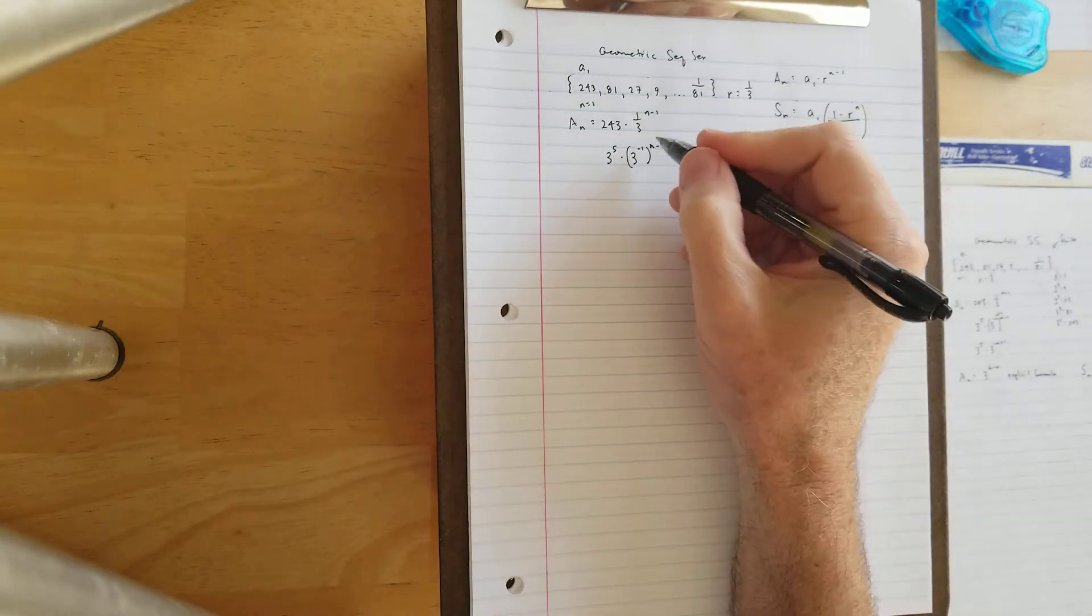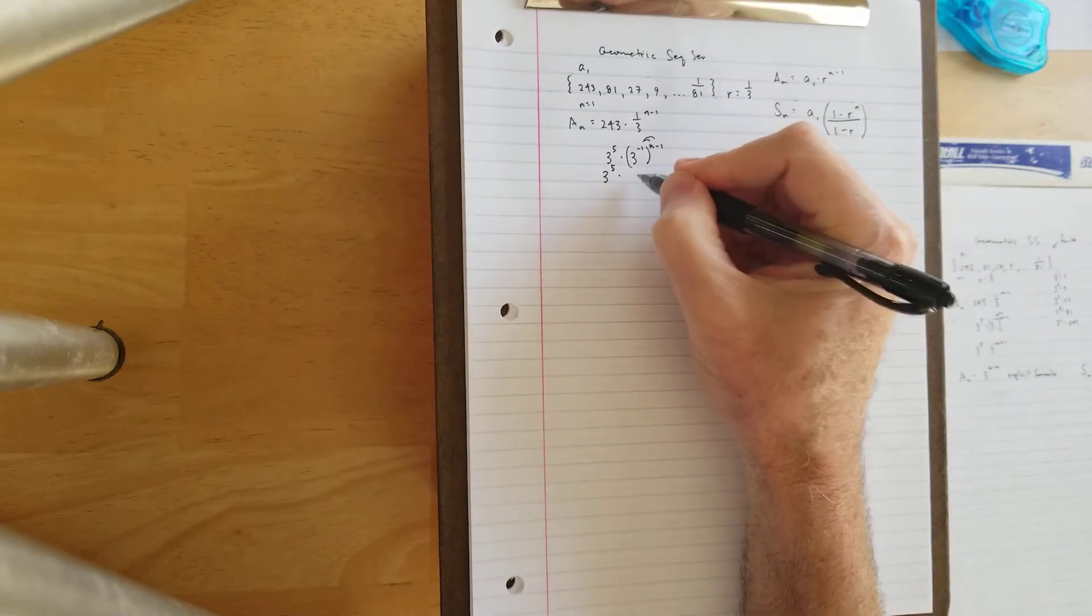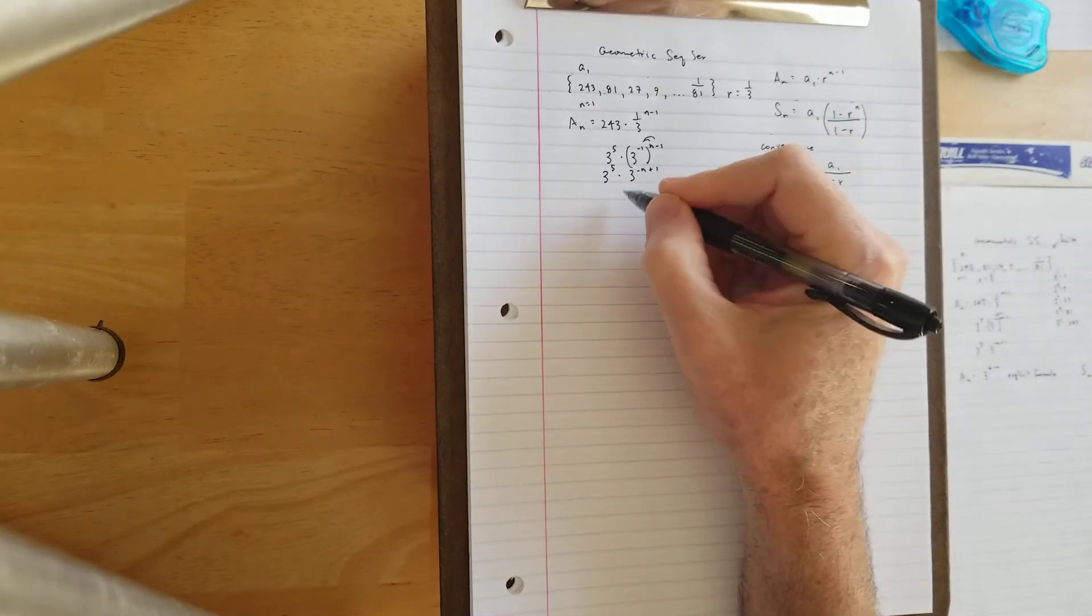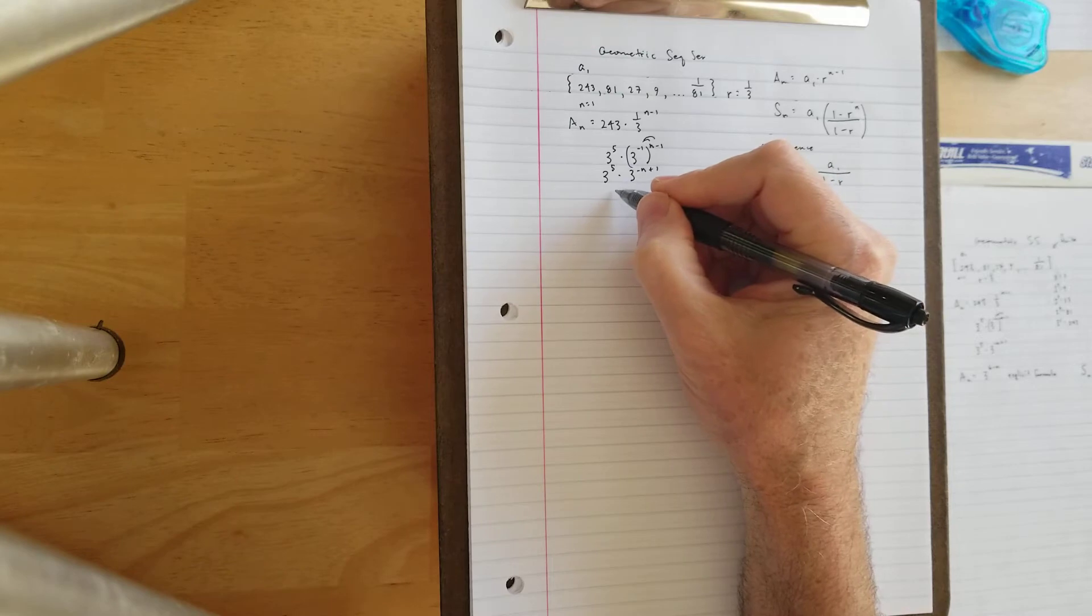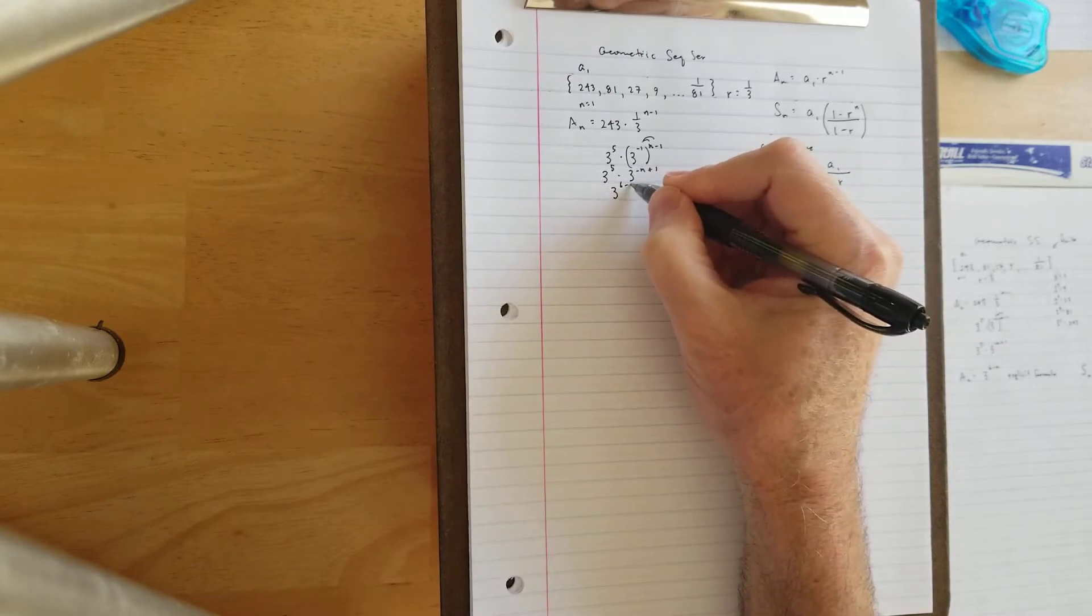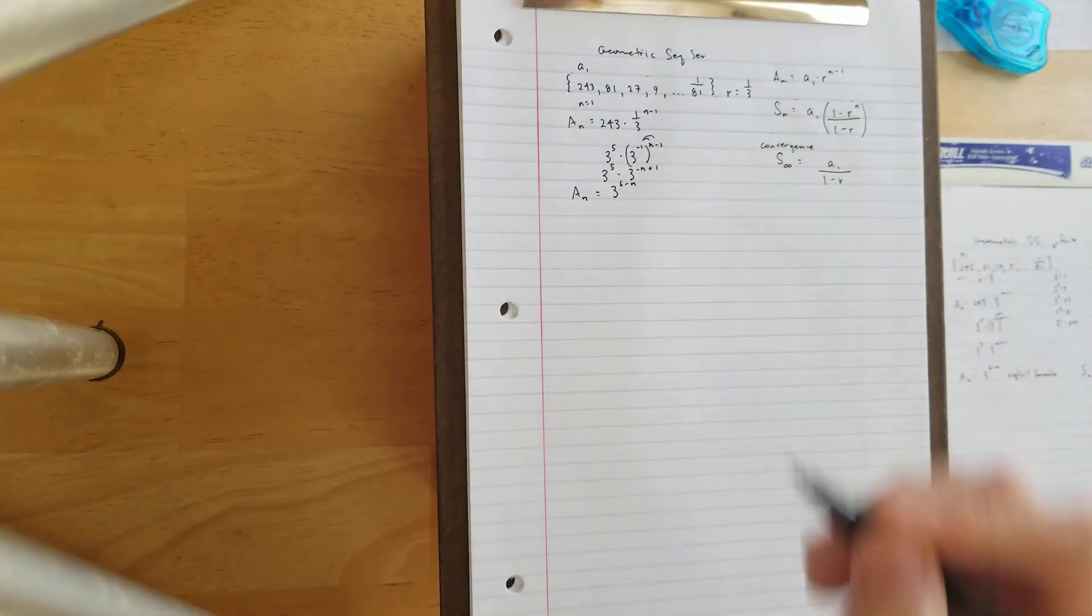And then we'll combine these together, distributing first. So 3 to the 5th times 3 to the negative n plus 1. And when we add our powers here using exponent rules, we get 3 to the 6 minus n, or 3 to the negative n plus 6. Either one of those is accurate.